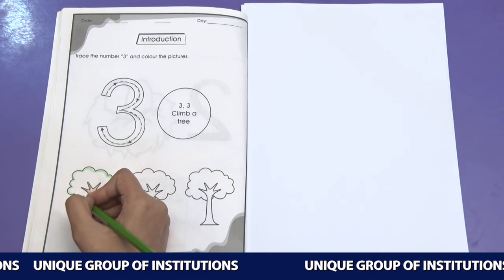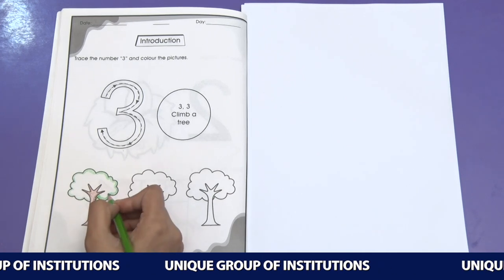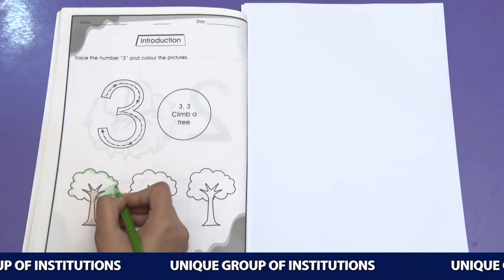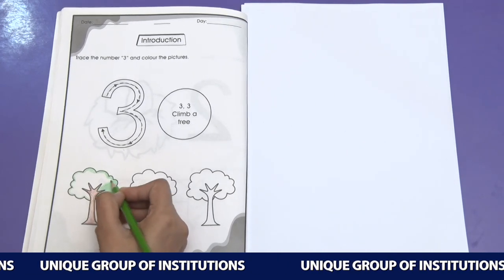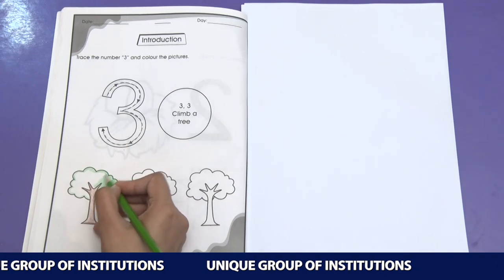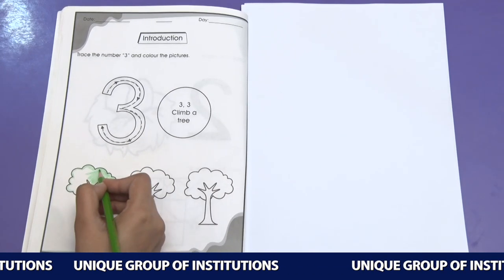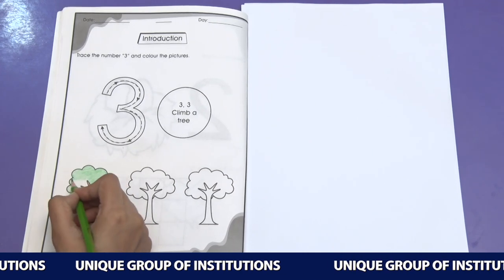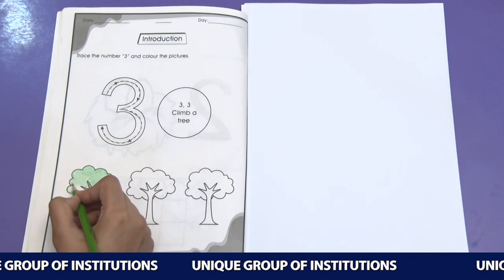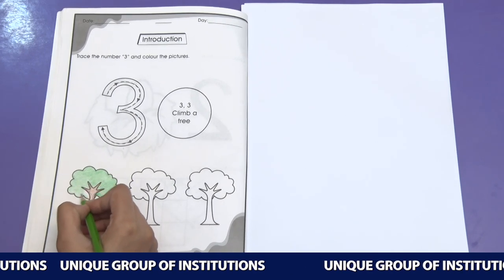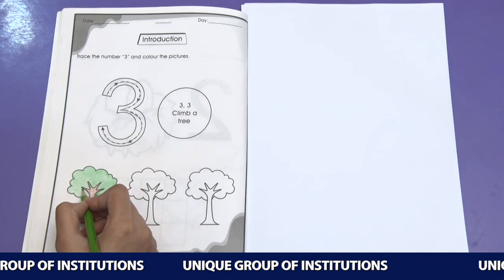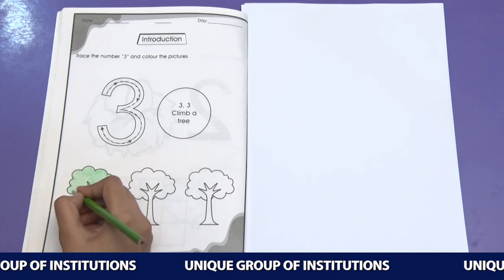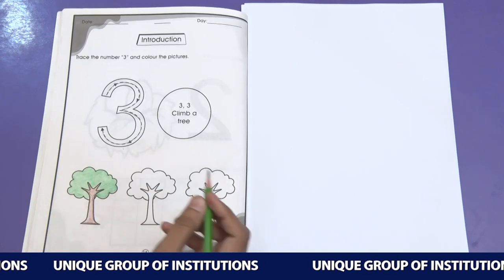Now we are going to fill it with green color. Let's fill it now. Did you see how nice it's looking? It's looking so good. Did you see leaves are green? Yes, tree leaves are always green. Very good.